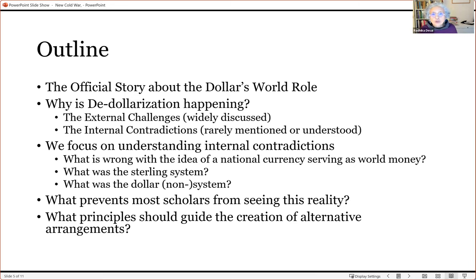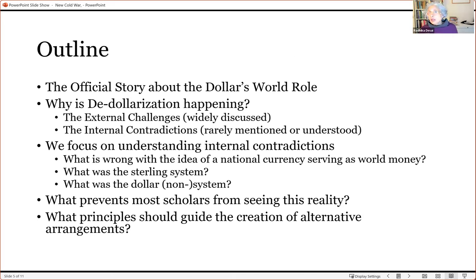I want to focus on understanding what those contradictions are — for instance, what is wrong with the idea that the national currency of one country, no matter how powerful, should serve as world money? What was the sterling system? This is important because the dollar system always looks back to the sterling system, saying: just as pound sterling dominated the world economy, so the dollar dominates today.